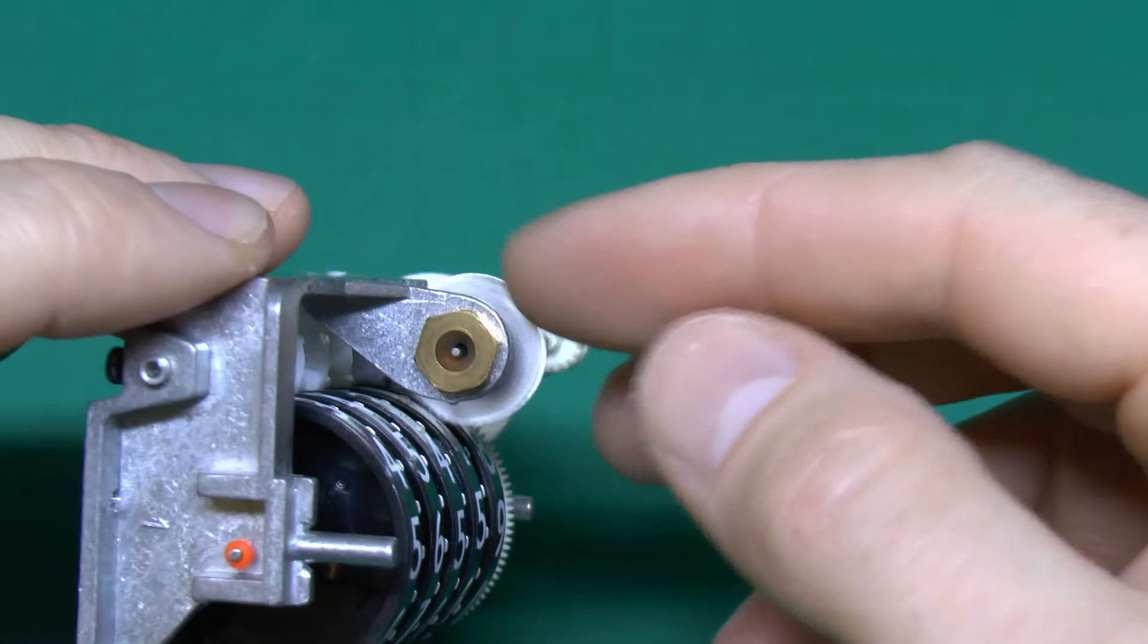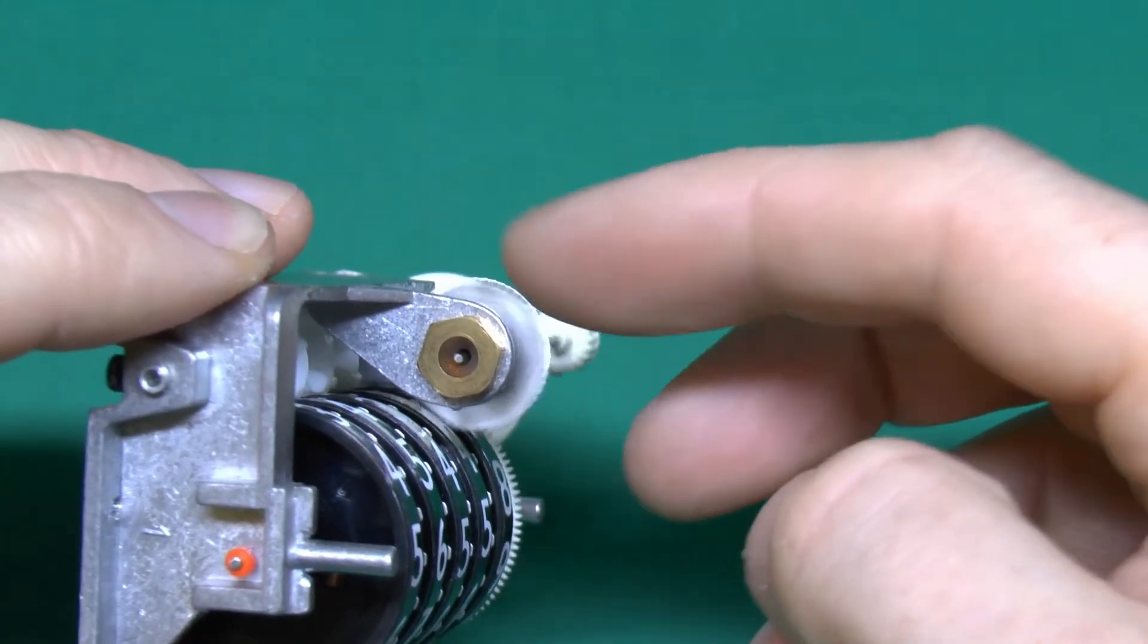This one has a metal drive wheel on the back. The other meter is a plastic one.